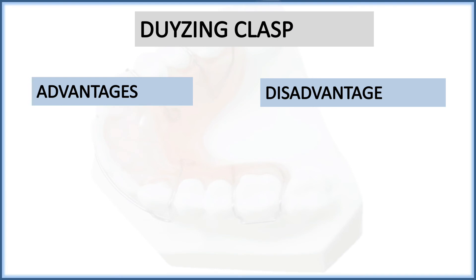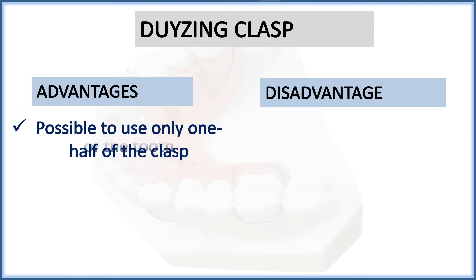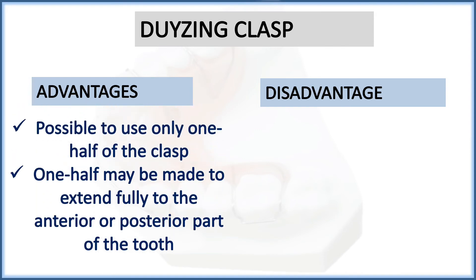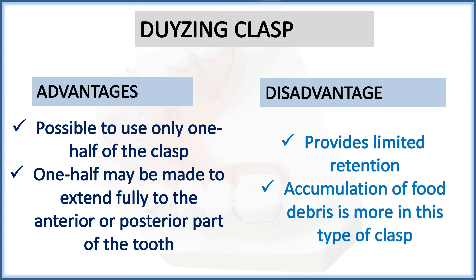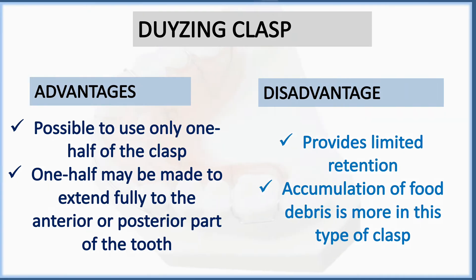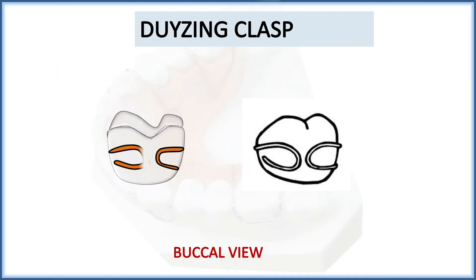Now a brief introduction to rarely used clasps. The Duzing clasp: advantage is it is possible to use only one half of the clasp, which may be made to extend fully to the anterior or posterior part of the tooth. Disadvantages: provides limited retention and accumulation of debris is more common. A buccal view of this clasp is also shown.